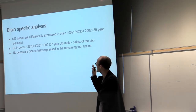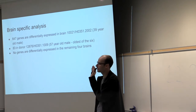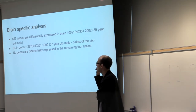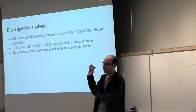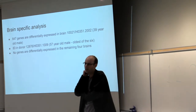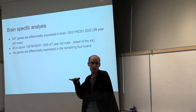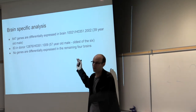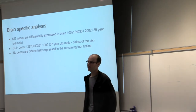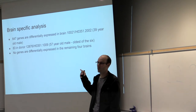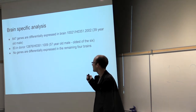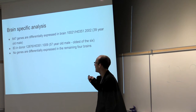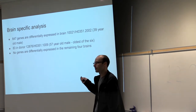One striking result: if you do this across the six brains, one individual — a 39-year-old male — has 647 genes passing multiple test correction out of 15,000. In the oldest individual of the six, you get 83 genes. In the other four brains, there are no hits after multiple test correction. If you intersect the 647 with the 83, there are only three genes that overlap, which is what you'd expect by chance. So there's a uniquely strong signature in this one 39-year-old brain.